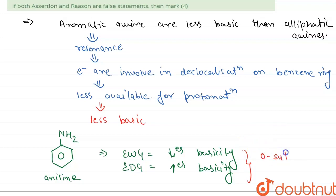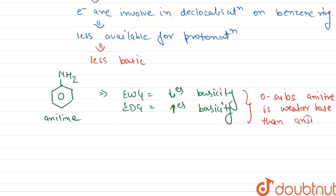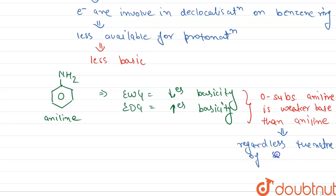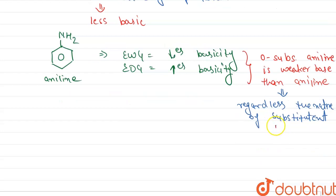The ortho-substituted aniline is a weaker base than aniline regardless of the nature of the substituent, whether it is electron-donating or electron-withdrawing. This effect is known as the ortho effect.